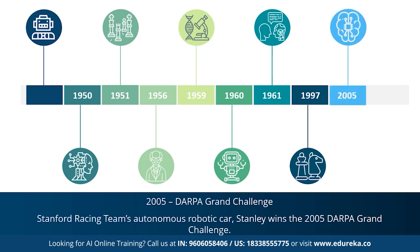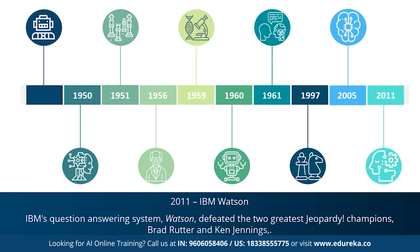2005 marks the year when an autonomous robotic car called Stanley won the DARPA Grand Challenge. In 2011, IBM's question answering machine Watson defeated the two greatest Jeopardy champions Brad Rutter and Ken Jennings. Since the emergence of artificial intelligence in the 1950s, we have seen exponential growth in its potential. AI covers domains such as machine learning, deep learning, neural networks, natural language processing, knowledge base, expert systems, and so on.